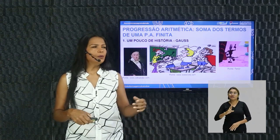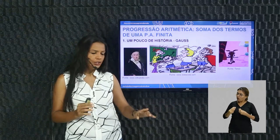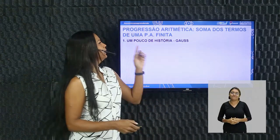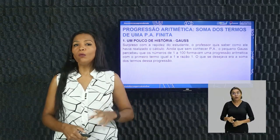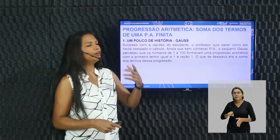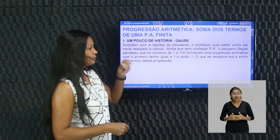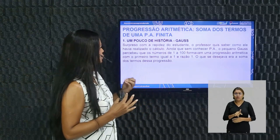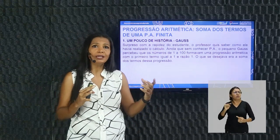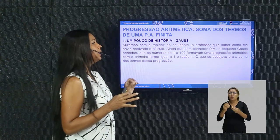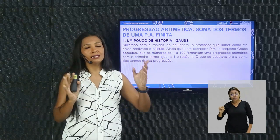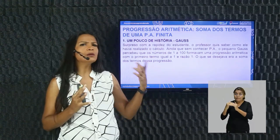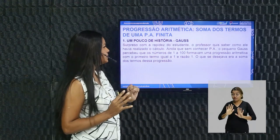O professor ficou muito surpreso e perguntou como ele tinha feito o cálculo. Gauss nem sabia o que era uma progressão aritmética. O que ele fez? Ele percebeu que na sequência de 1 a 100 havia um padrão. Para nós, que já sabemos o que é progressão aritmética, compreendemos que os números entre 1 e 100 formam uma PA onde a razão vale 1. O professor pediu a soma dos termos.